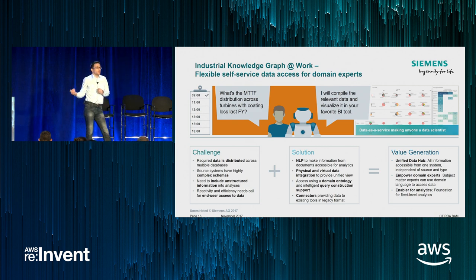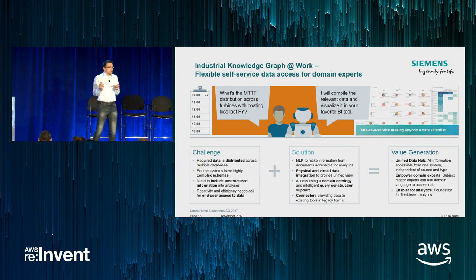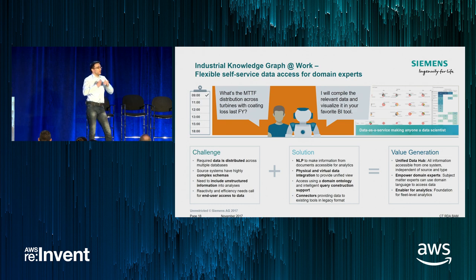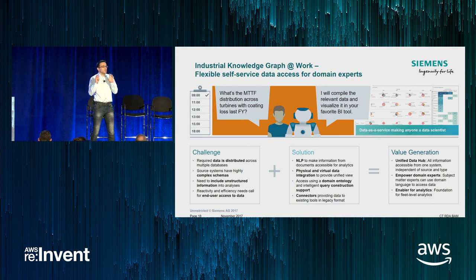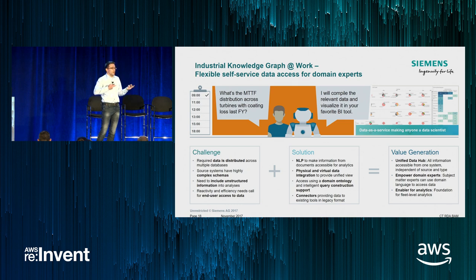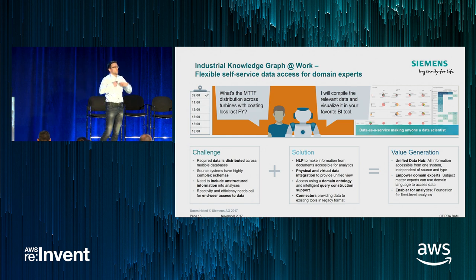We worked with a neighboring group applying NLP technology to extract facts from unstructured data and put them into the knowledge graph — what we call physical data integration. For large-scale operational time series data, we do virtual data integration (also known as ontology-based data access), where data remains in its source system but can be queried through an integrated graph view. We built a comprehensive domain ontology allowing end users to construct queries using domain concepts. We also built connectors using APIs and file access to bring all data together into a unified data hub, making it available for dashboards and machine learning.